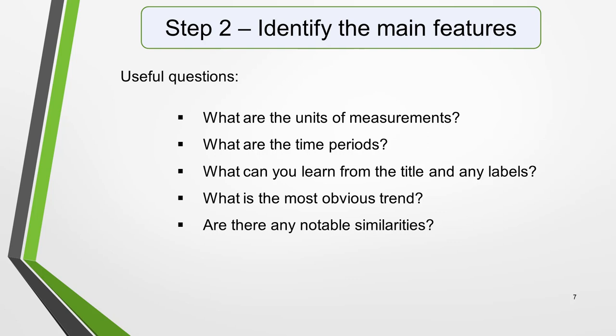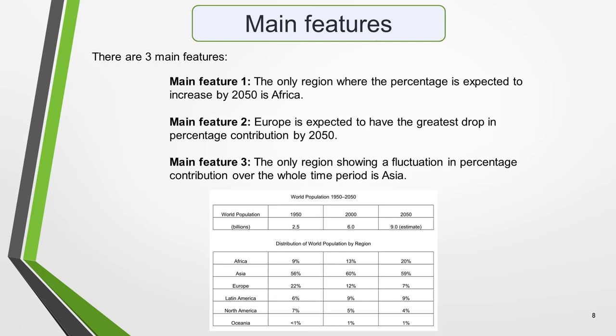There's a link to it in the notes below this video. The key to understanding it is to use the clues given in the title, the rows and column headings, and the units of measurement. For example, the title of the table tells us that it shows changes in world population from 1950 to projected levels in 2050. The world is divided into regions — for example, Africa, Asia, etc. — and data is given for three specific years: 1950, 2000, and 2050, which is projected data. In the first table the units of measurement are billions of people, and in the second table percentages of the total world population are used.